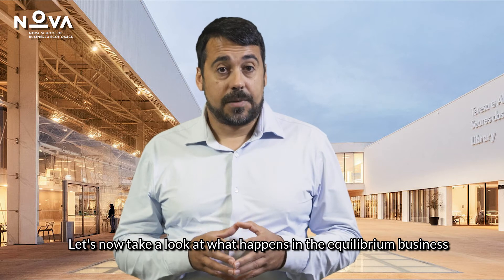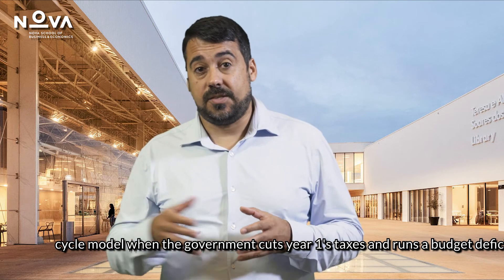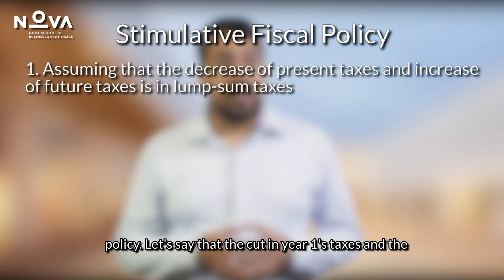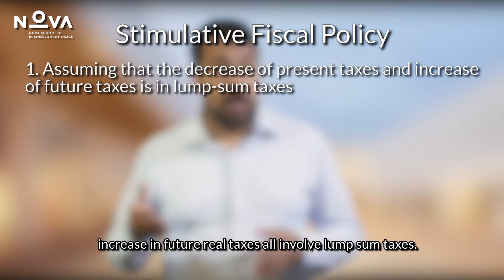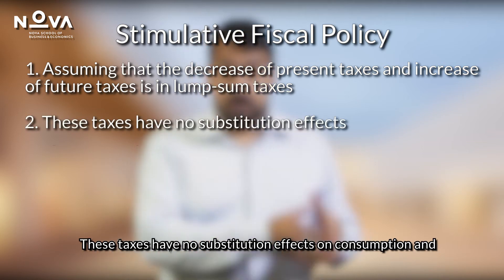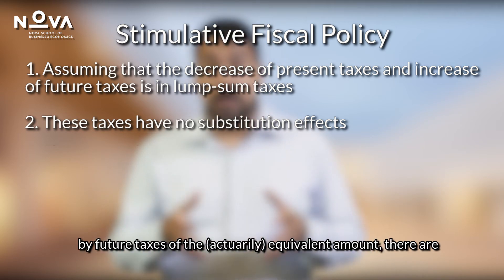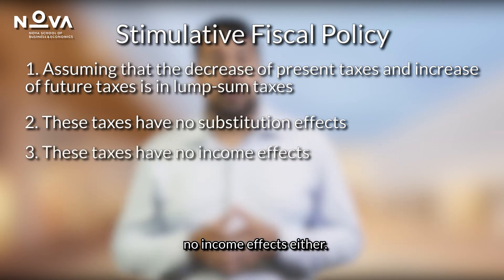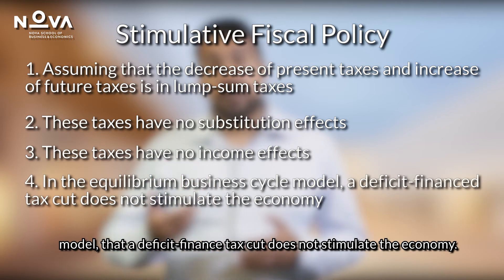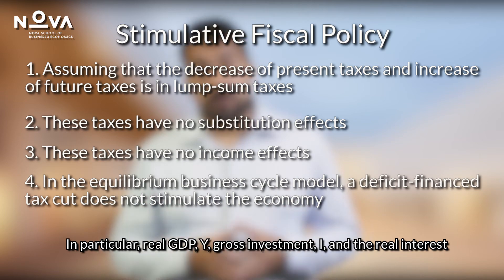Let's now take a look at what happens in the equilibrium business cycle model when the government cuts year-one real taxes and runs a budget deficit — economists call this type of change a stimulative fiscal policy. If the cut in year-one real taxes and the increase in future real taxes all involve lump-sum taxes, these taxes have no substitution effects on consumption and labor supply. Since the cut in taxes must be compensated by future taxes of an exactly equivalent amount, there are no income effects either. Consequently, in the equilibrium business cycle model, a deficit-financed tax cut does not stimulate the economy — real GDP, gross investment, and the real interest rate do not change.